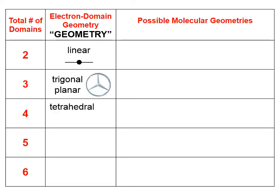If there are four total domains, the electron domain geometry is tetrahedral. The solid lines are domains in the plane of the screen, the elongated dark triangle represents a domain coming out towards us, and the dashed line indicates a domain going further into the screen — giving a three-dimensional effect.